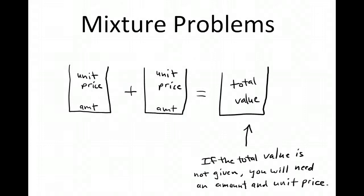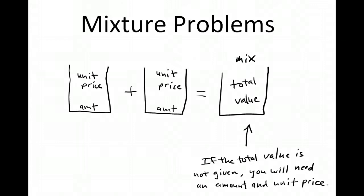This video will go over mixture problems from the class handout. For dry mixture problems, we use a bucket method: bucket plus bucket equals bucket. Whatever we're mixing gets its own bucket. In the bottom of each bucket, put the amount you have; in the top, put the unit price. For the mixture bucket, you'll either be given the total value, or you'll need the amount and unit price.